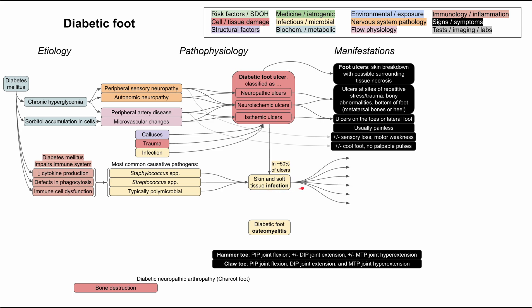There are some unique symptoms of an infected ulcer. These include edema or swelling, induration or a hard feeling, and erythema — especially when bigger than half a centimeter in diameter, which may signify infection. Tenderness may be present unless the patient is completely numb due to neuropathy. Warmth may also signify infection, and purulent exudate can indicate infection since it creates pus.